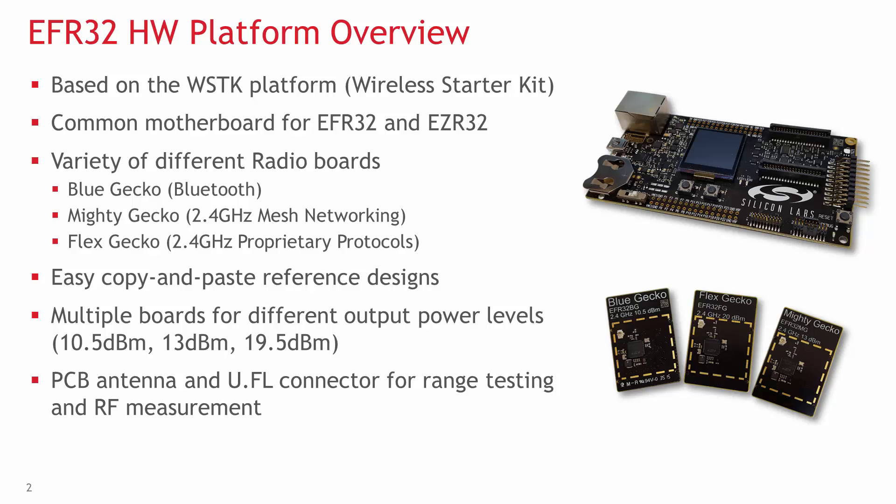A radio board is an easy copy-and-paste reference design that has all the necessary components around the EFR32. They are available for multiple output power levels: 10.5 dBm, 13 dBm, and 19.5 dBm. Both a PCB antenna and a U.FL cable connector have been integrated to support immediate range testing and RF lab measurements.